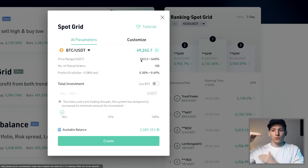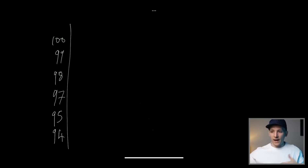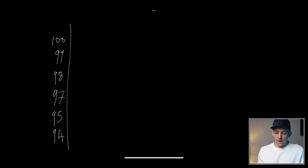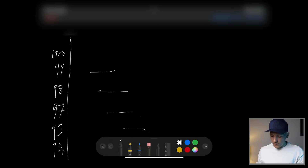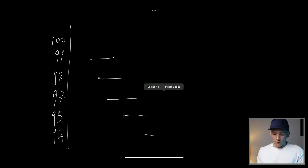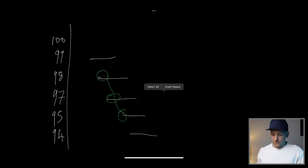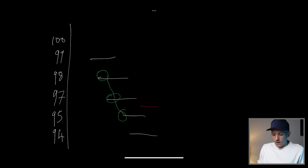Let me explain how a grid works. Imagine a price chart with a grid range — say 94 at the bottom and 100 at the top. The grid bot places buy orders at descending price levels. So if the price starts around 98 you buy some, it drops to 97 you buy more, it drops to 95 you buy more. Simultaneously it places sell orders above each buy level, so crypto bought at 95 might sell at 96, crypto bought at 97 sells at 97.50, and so on.